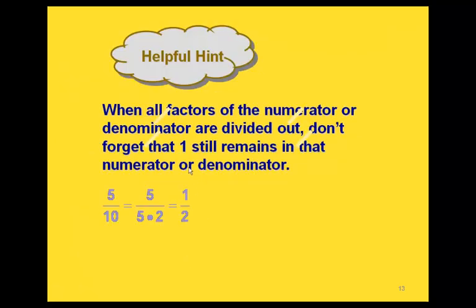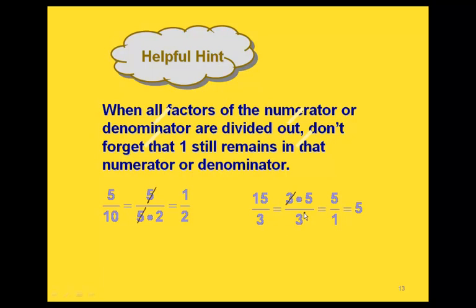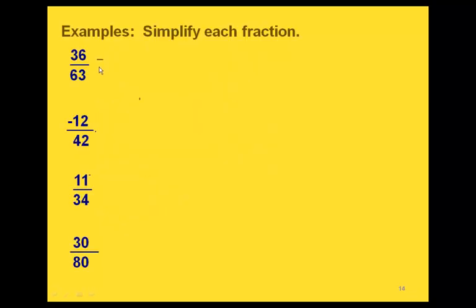Remember: when doing this, if a factor in either the numerator or denominator gets completely divided out and there's no factor left, you still have a 1 there. For example, if we write the prime factorization of 10 as 5 times 2 and cancel the 5 on top and bottom, we still have a 1 remaining in the numerator. Similarly, if we cancel the 3 from both numerator and denominator and end up with a 1 in the denominator, remember that a number over 1 is just the whole number — so 5 over 1 equals 5.